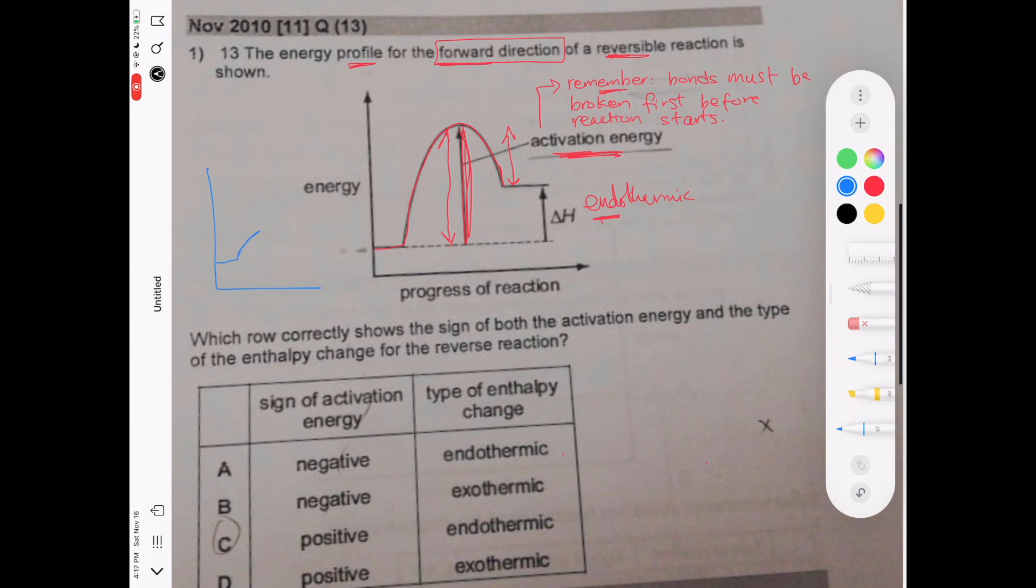But if it absorbed just a little bit of energy, remember it's always going to first absorb some energy, and then it produced a lot of energy when forming bonds, then it's going to be an exothermic reaction.